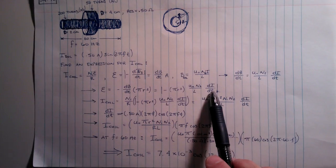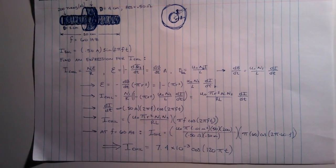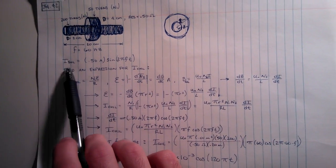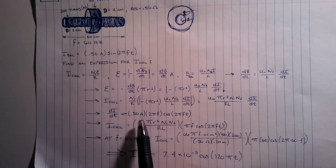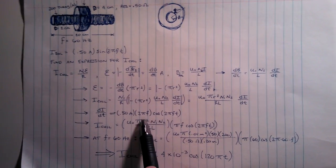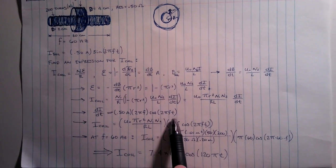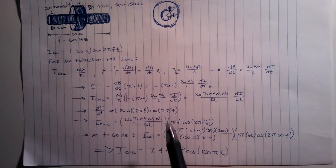Since the current is changing you're going to need to find the dI/dt of this equation and down here that is 0.5 amps times 2πF cosine of 2πFT. This is a function of time.